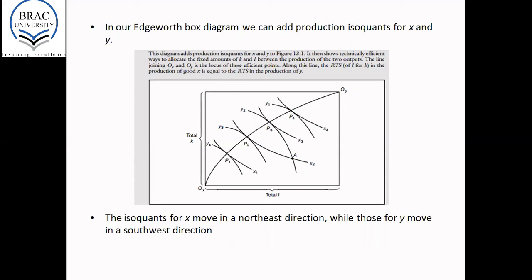As we move from point A to point P2, the amount of X being produced remains the same, but the amount of Y which is produced has gone up. So the amount of X which is produced at point P2 remains at X2. But the amount of Y which is being produced at point P2 goes up from Y2 to Y3. So overall, without sacrificing any of the output of X, we have increased the output of Y.